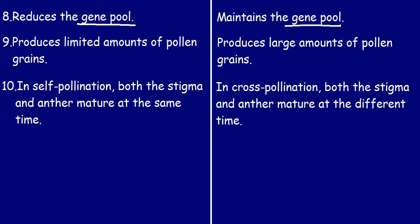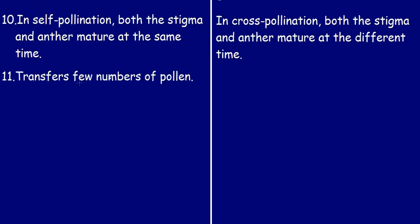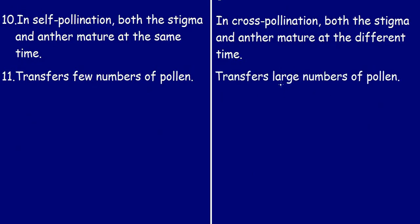The eleventh point: for self-pollination, a few number of pollen grains are transferred. For cross-pollination, a large number of pollens are transferred.